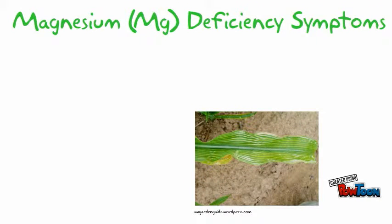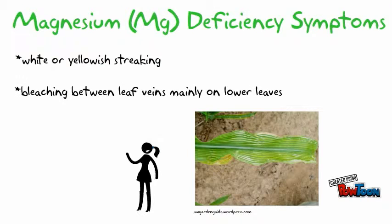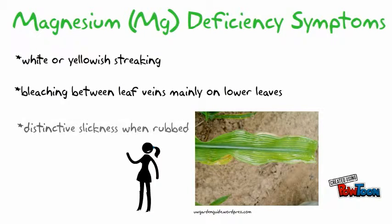Magnesium is another important macronutrient in corn production. Magnesium deficiency symptoms include white and yellow striping reaching between leaf veins, mainly on lower leaves, and has a distinctive feel when rubbed.